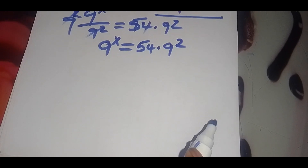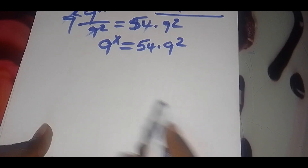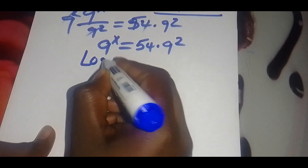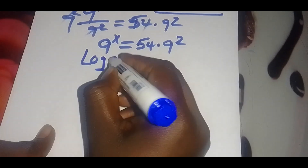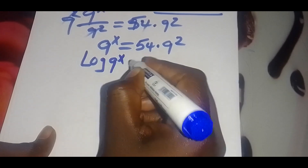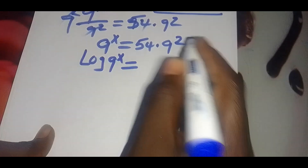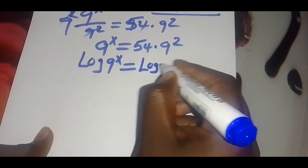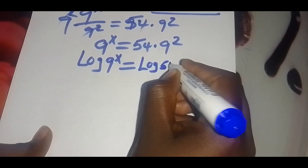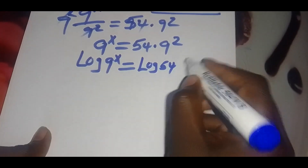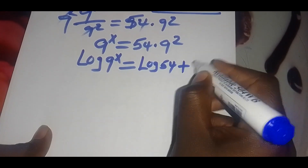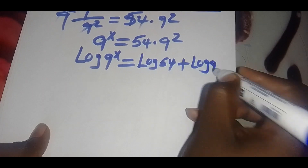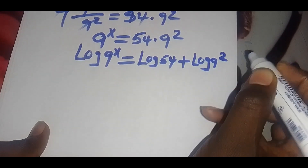To solve for the value of x, we introduce the natural logarithm. We'll have log 9 raised to the power x, this is equal to log 54 plus log 9 squared.